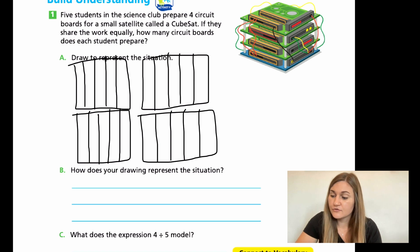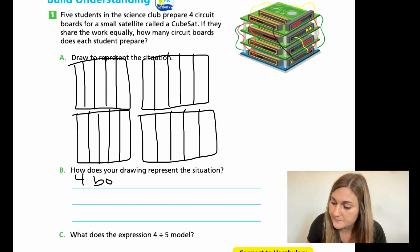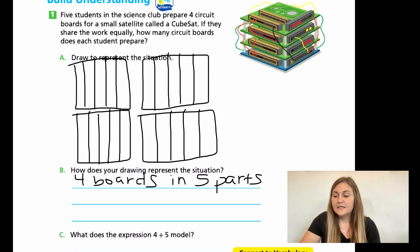All right, so for B, it says, how does your drawing represent the situation? Well, I drew four boards. And then I drew the four boards into five parts. You can write, obviously, something more sophisticated than this, but that in its essence is what I did. I drew four boards and I put it into five parts. So that's what I did in words.